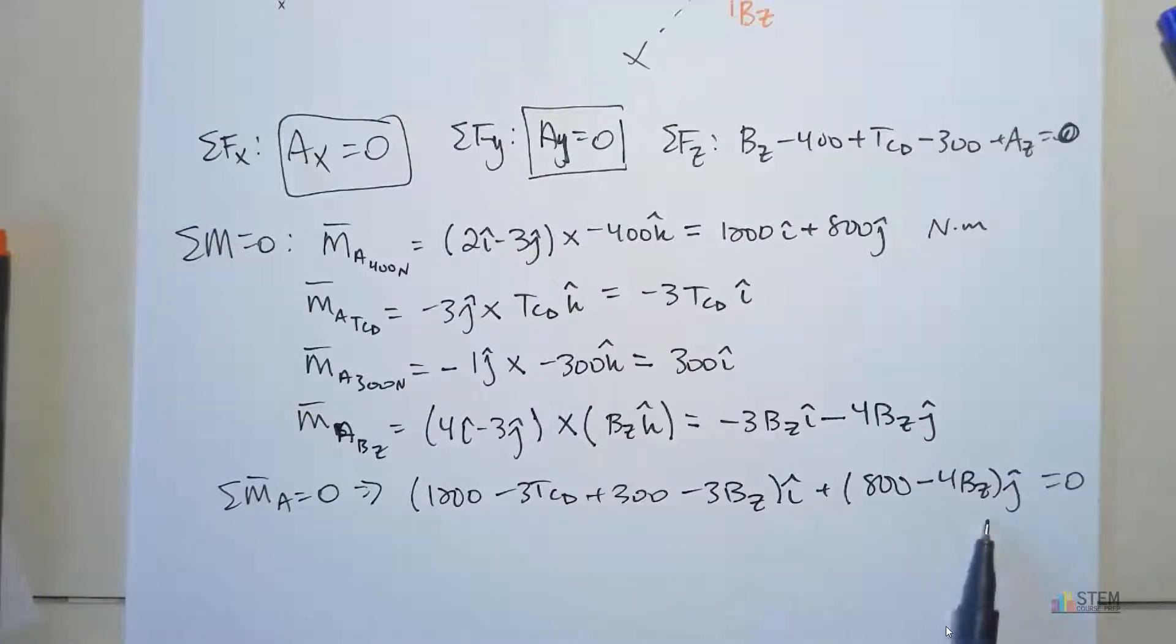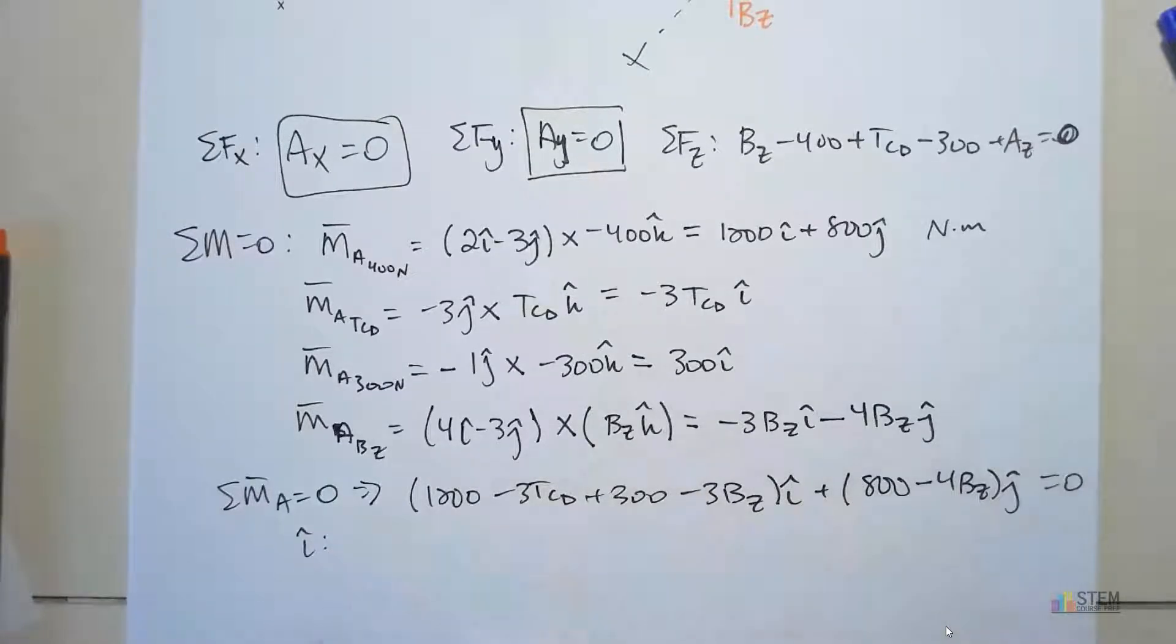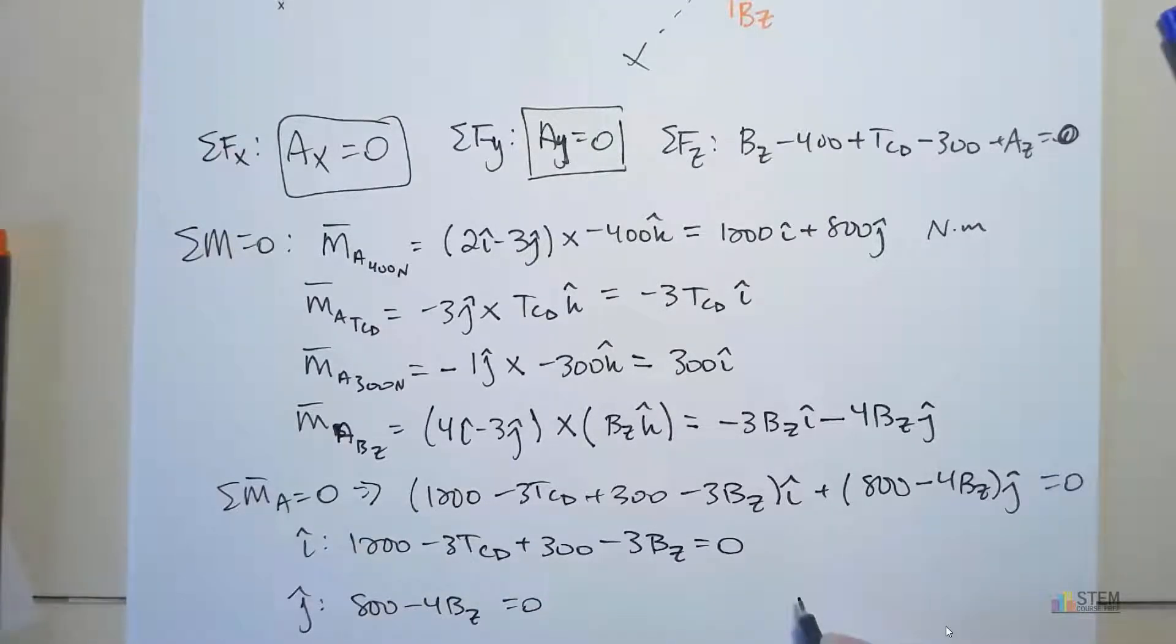Now remember, each one of these terms gives you an equation. So we get two equations out of this. Let's look at the I components: 1200 minus 3TCD plus 300 minus 3BZ equals zero. And then for J, we've got 800 minus 4BZ equals zero. Now look, this one only has one unknown. That's good. That means we can solve for BZ. BZ is then going to be 200 newtons. Let's box that because that's one of the answers we want.